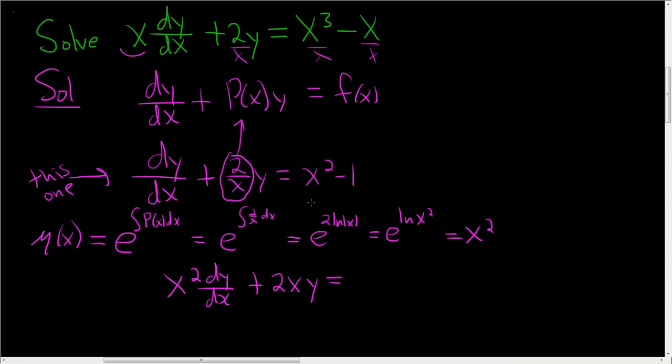And then here, be really careful here. It's really easy to mess up. So x squared times x squared is x to the fourth, and then minus x squared.